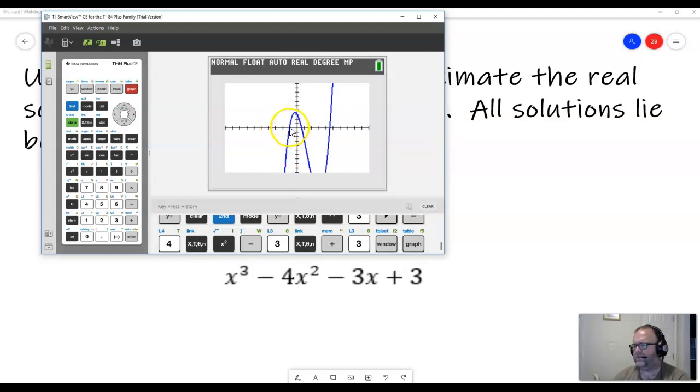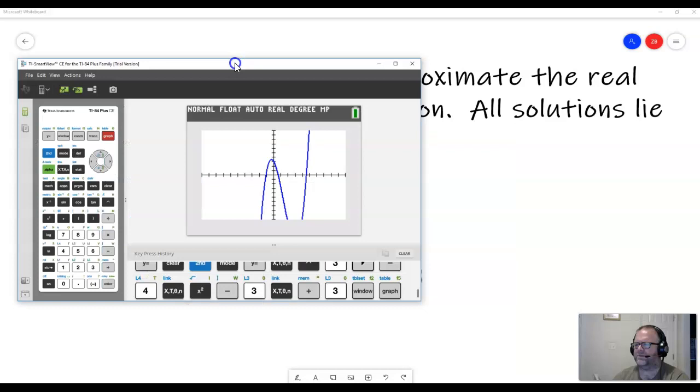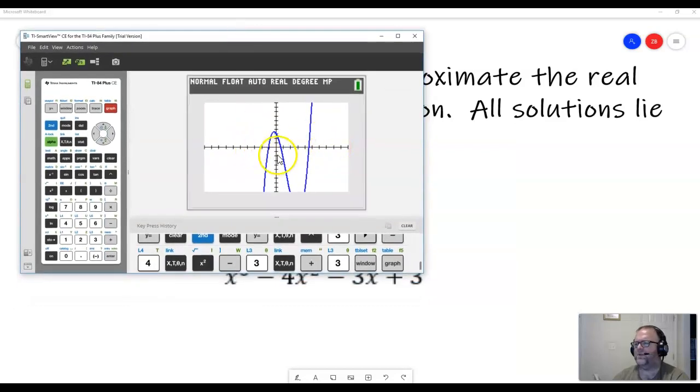So we can see that it looks like we're going to have three real solutions. One right here, which looks somewhere around negative 1. One right here, which looks somewhere around positive two-thirds. And one right here, looks somewhere around 1, 2, 3, 4, 5, about 5.5. Now, remember, we need to give accurate answers up to two decimal places. We want to use our calculator to solve this.